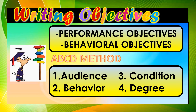Learning objectives are sometimes called performance or behavioral objectives. These are statements of the intended outcomes of instruction. They must be student-centered and focused on a singular concept, describing in specific and measurable terms what students are expected to be able to do after completing a lesson or instructional unit.